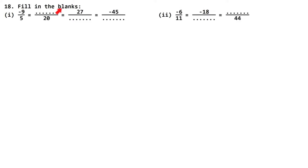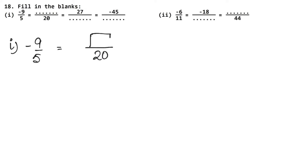In this question, we are filling in the blanks. We need to fill these blanks. The first part is: minus 9 upon 5 equals dash upon 20, equals 27 upon block, equals minus 45 upon block.